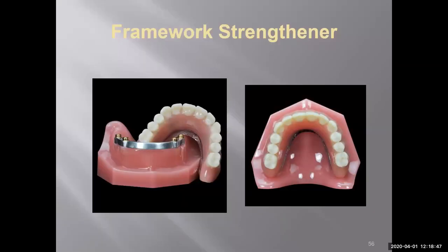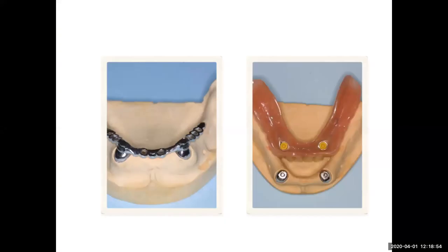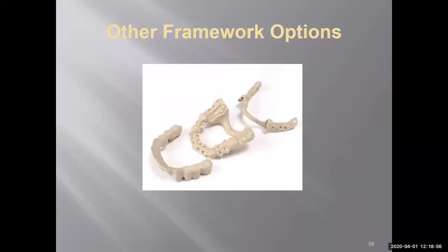As far as framework strengtheners go, about 80-90% of the time we're using cast chrome cobalt strengtheners. But now there are some new materials called super polymers — there's PEEK material and various others that are probably a little more aesthetic. Strength-wise, they pretty much do the same job as a metal framework. You want to make sure you do utilize a strengthener inside these overdentures, because 95% of the time you're going to get breakage right near the attachment.